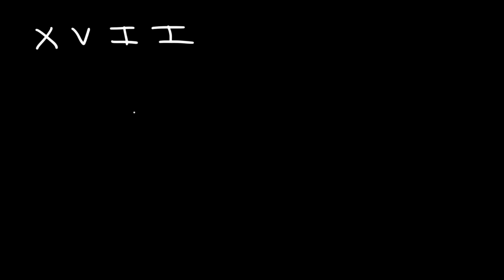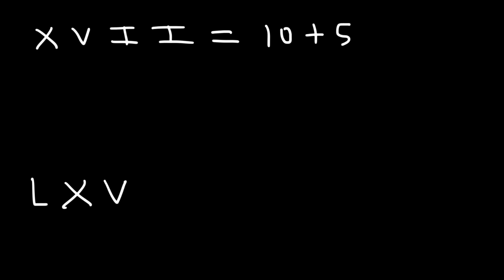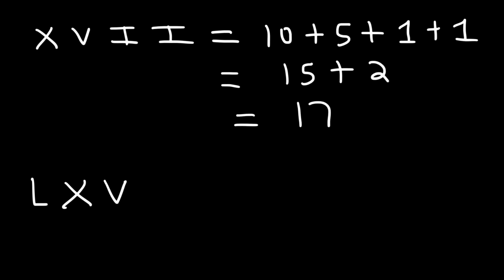Based on those two examples, try these two: convert XVII and LXV into numbers. X is equal to 10, V is 5, and I is 1. So we have 10 plus 5 plus 1 plus 1. 10 plus 5 is 15, and 1 plus 1 is 2, so this adds up to 17. XVII is equivalent to 17.